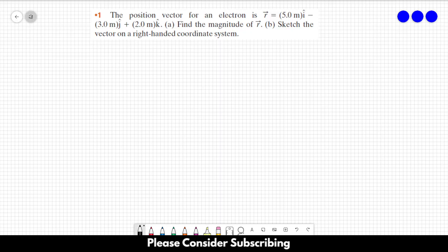Letter A, find the magnitude of vector r. Letter B, sketch the vector on a right-handed coordinate system. So, we want to find out first the magnitude of this vector over there. Let's just write it down.